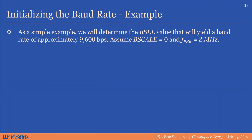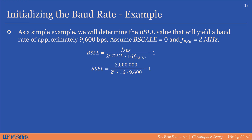To better understand how to initialize the baud rate, let's do a simple example. Our goal will be to configure the baud rate to approximately 9600 bits per second. Assume b-scale equals 0 and the peripheral clock frequency is 2 MHz. This is the equation we use for this example — refer to the table of baud rate equations covered earlier. This equation was chosen because b-scale is 0 and our goal is to calculate a baud select value. After plugging in the known parameters, we get a baud select value of approximately 12.02. The baud select value must be an integer, so we'll round the result to 12.